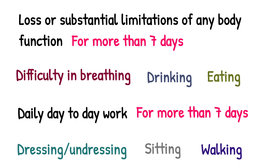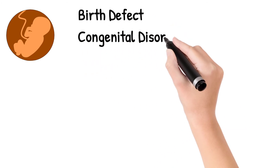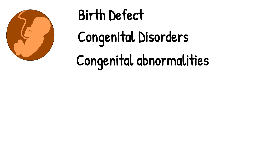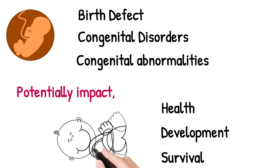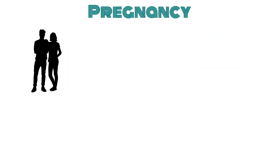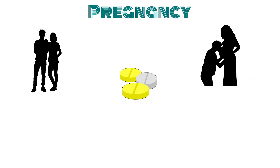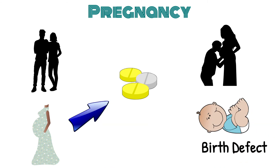Now let's move to the fifth seriousness criteria, which is congenital anomaly — also commonly called birth defects, congenital disorders, or congenital abnormalities. A birth defect is a condition present at the time of birth which can potentially impact the health, development, and survival of a newly born baby or infant. This seriousness criteria can be used only in pregnancy reports, where any parent is exposed to medication and conceives a baby after that, or where a pregnant mother took a drug and the baby had a birth defect. In such scenarios, we need to create a separate baby case.